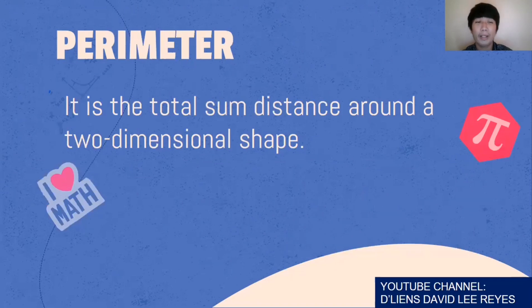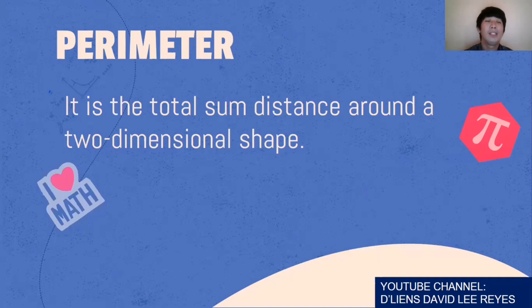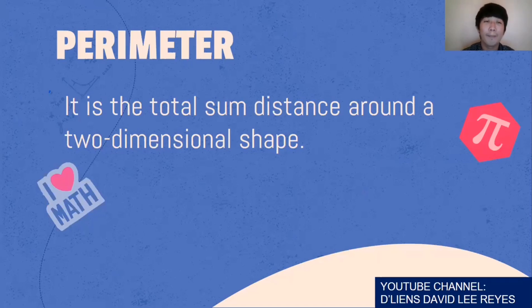What is perimeter? Perimeter is the total sum distance around a two-dimensional shape, such as a triangle, rectangle, square, and so on and so forth. So perimeter is the total sum distance around a two-dimensional shape.